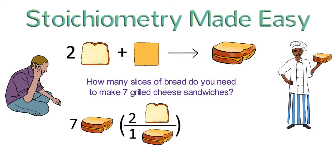We put the two slices of bread on top, because that is what we are solving for, and the one sandwich on the bottom, because that is the quantity that we started with. Sandwiches on the top and bottom cancel each other out,